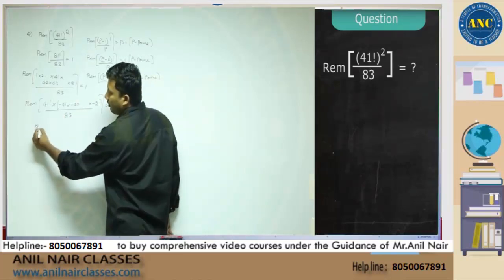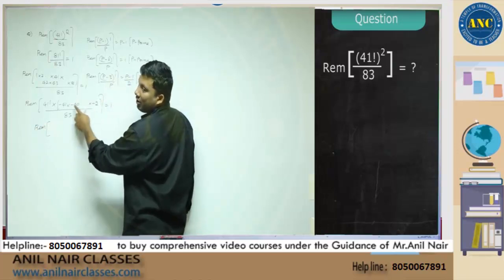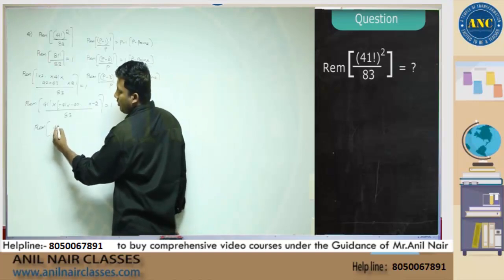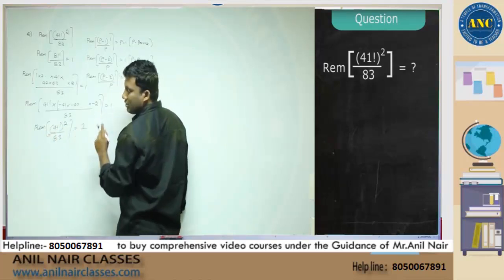2 to 41, there are how many numbers? 40 numbers. 2 to 41, 41 minus 2 plus 1 is 41. 40 negatives are positive. So, 41 factorial whole square divided by 83. The answer is not...